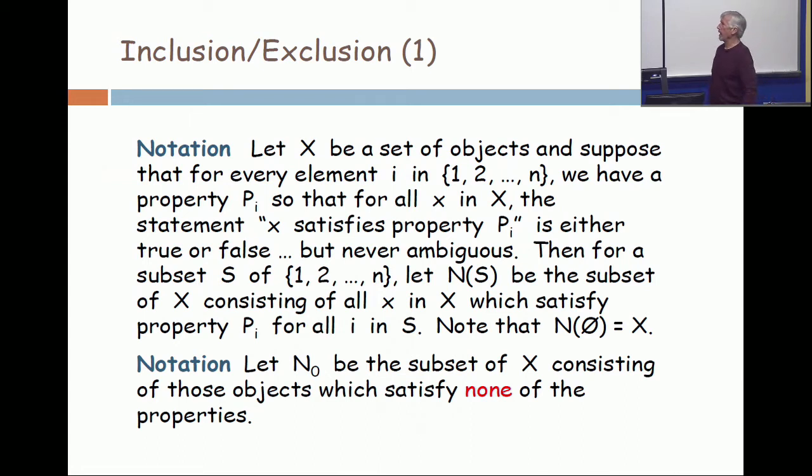So here's the idea behind inclusion-exclusion. It is to abstract what we have just seen with very small examples, taking you back to probably middle school. If you have a set of objects, some universe, and suppose that for every i in 1 to n, you have a property P_i, some statement, so that for all x in your universe, this statement is either true or false.